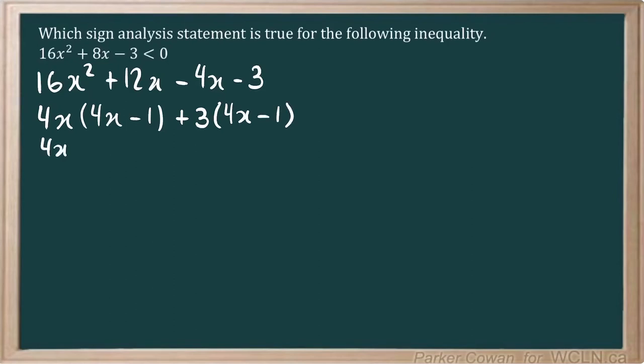So this leaves us with 4x plus 3 and 4x minus 1. All right, so this will give us roots of x is equal to negative 3 over 4 and of 1 over 4.